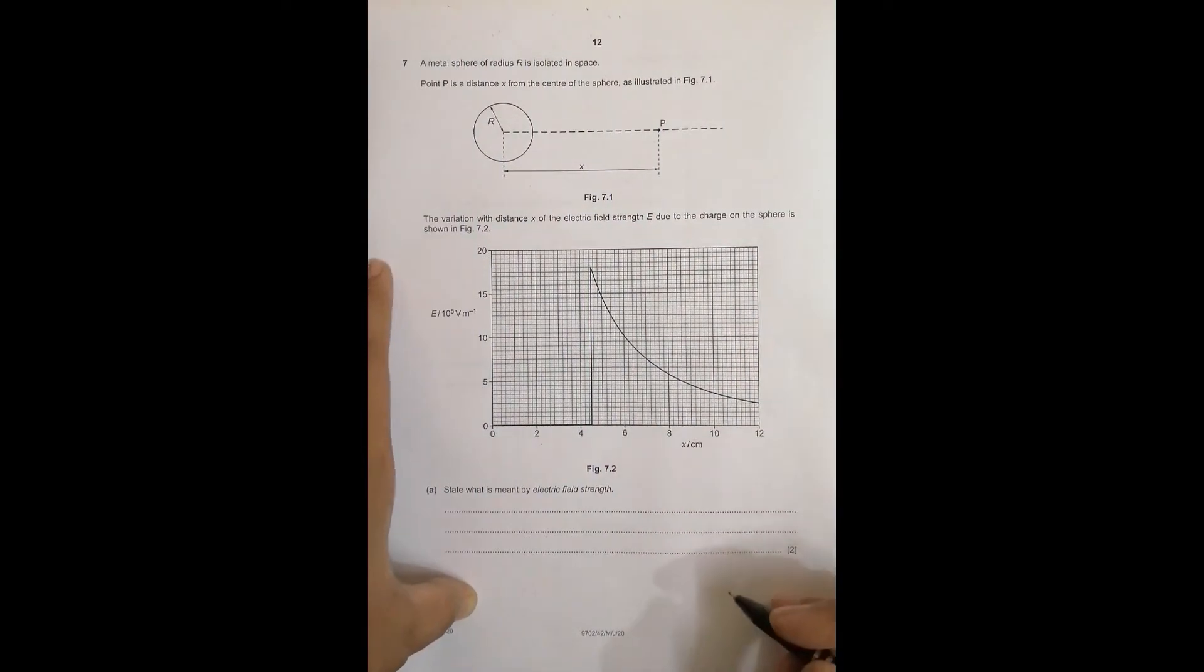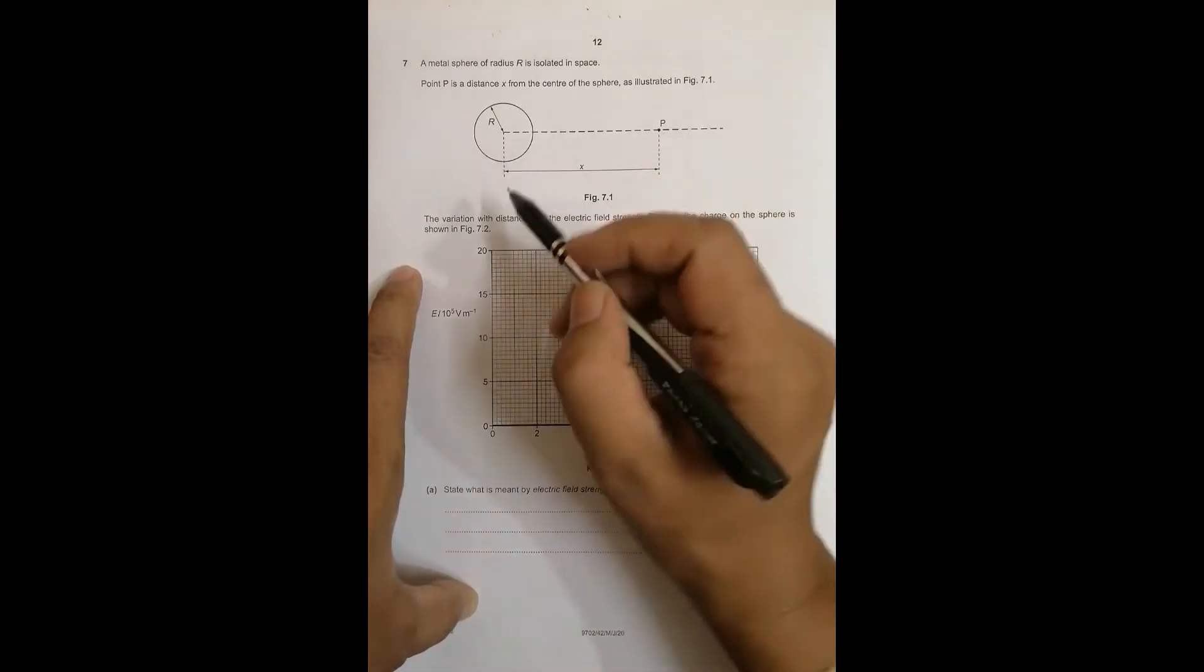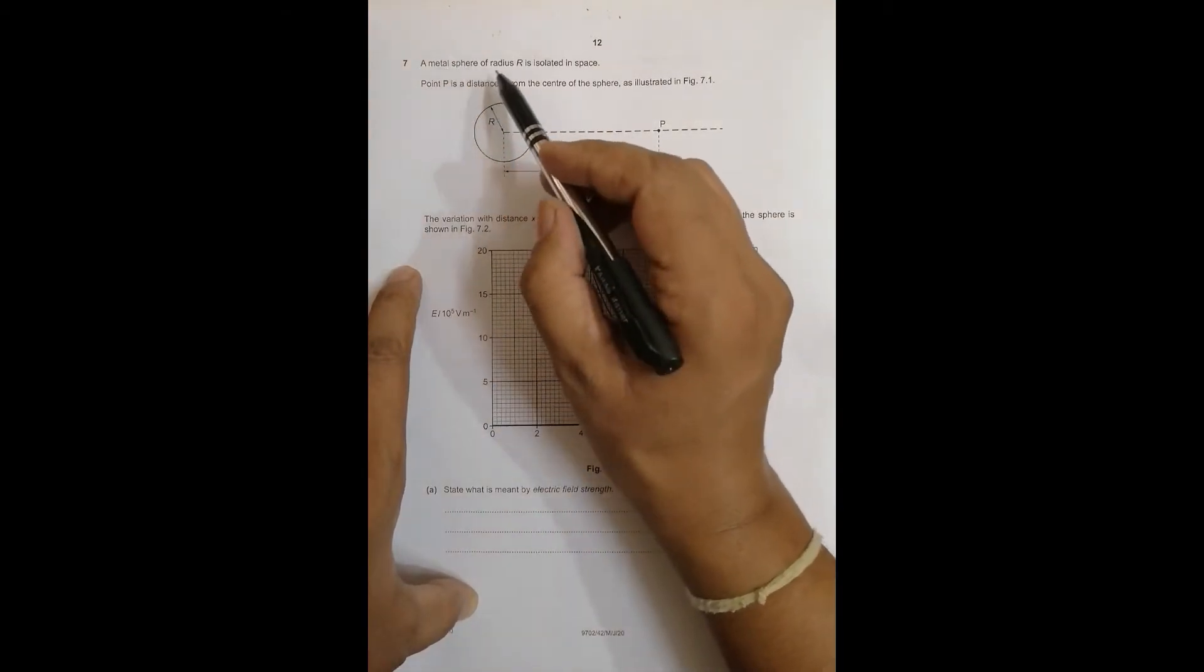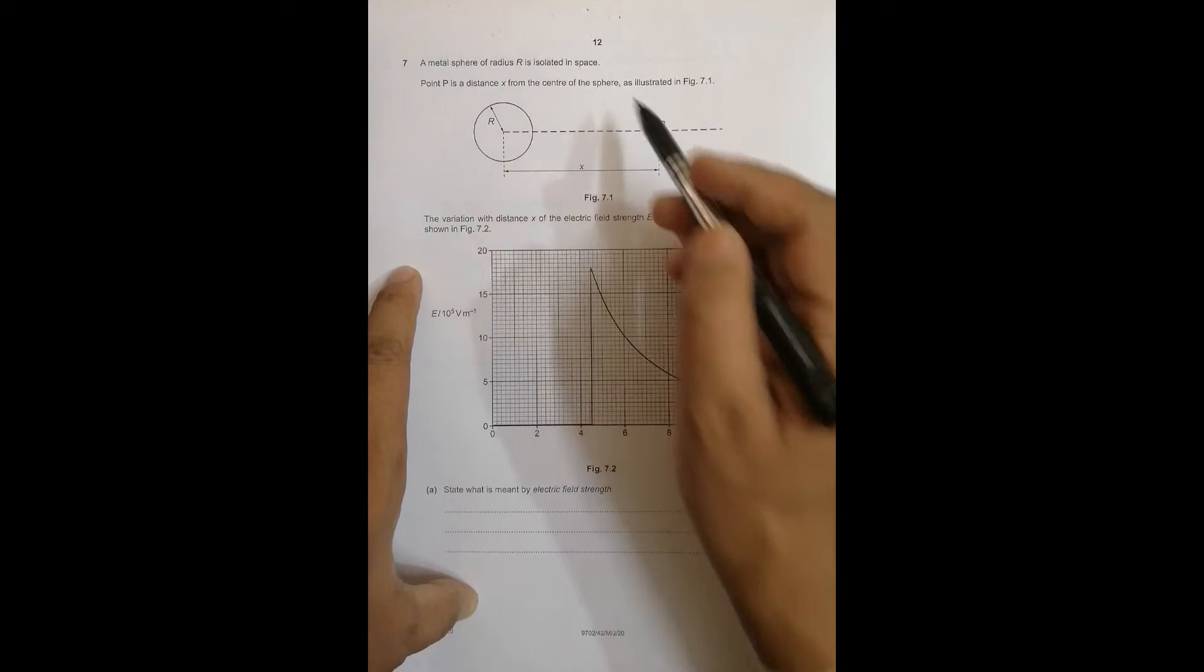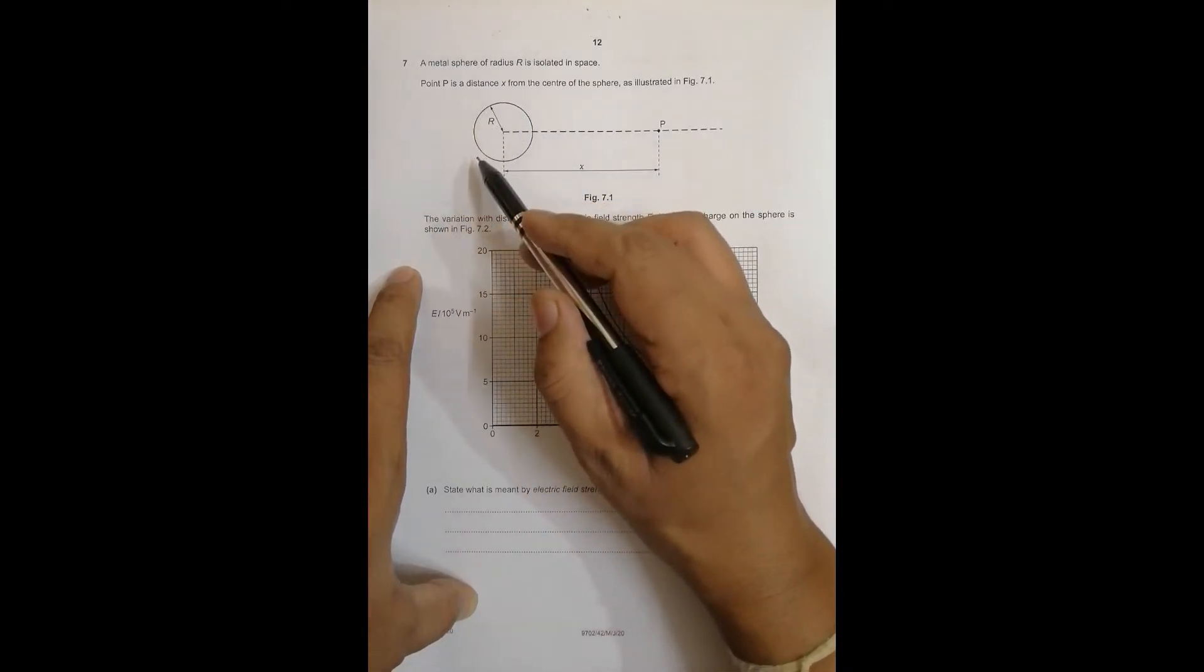Hello folks, this is the first PFO paper from the May June 2020 exams, so it is 2020 May June paper 42 and the question number is seven. The chapter involved is electric field. It says that a metal sphere of radius R is isolated in space, so space means it's not affected by any other charge bodies.